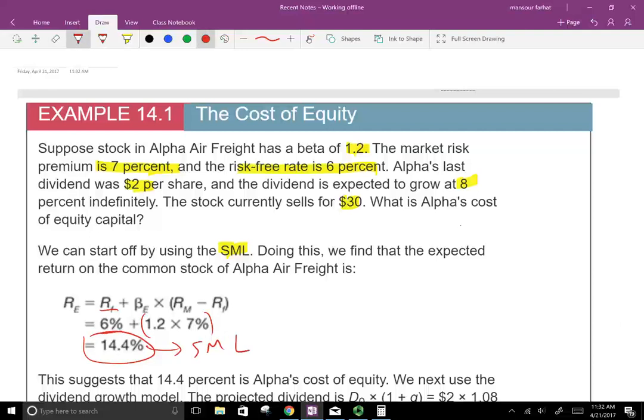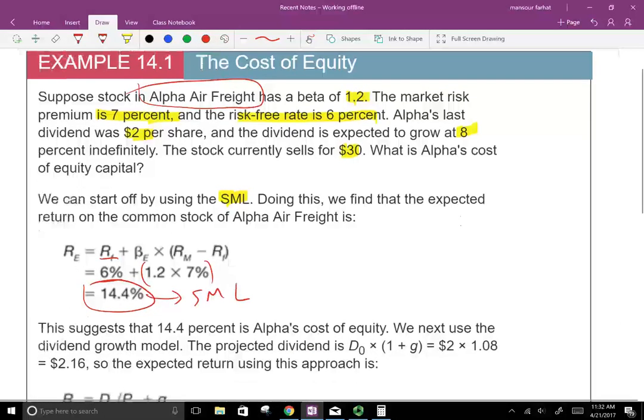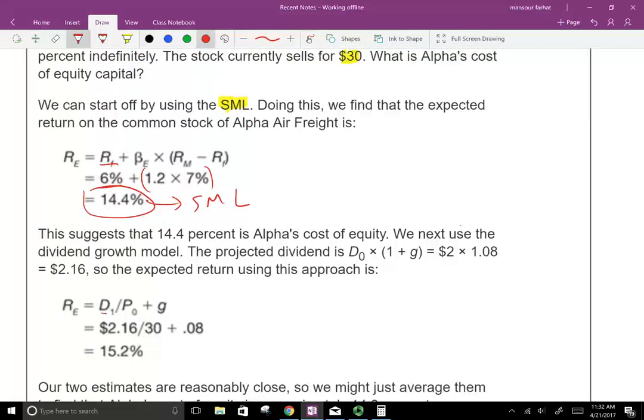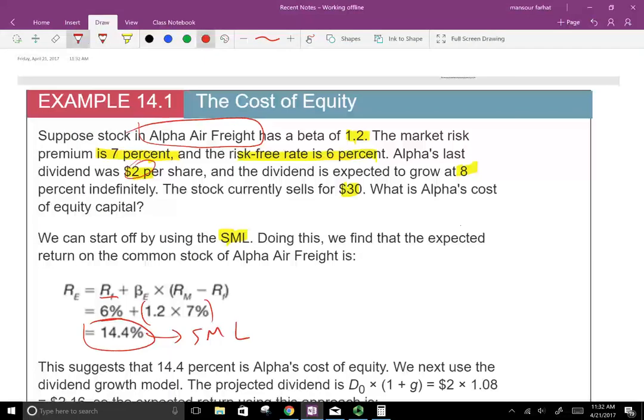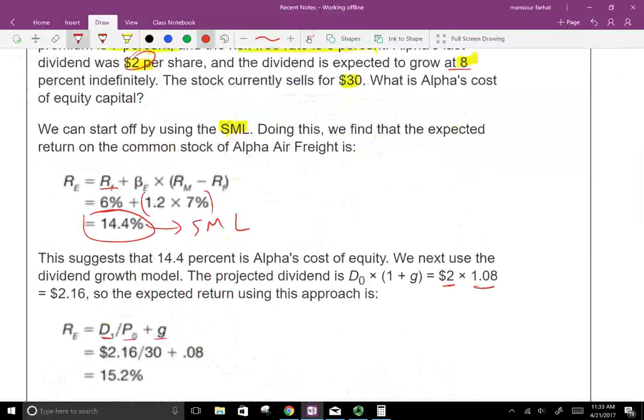Now we could use the same thing and find the cost of equity using the dividend growth approach. The formula is D1, the future dividend, divided by the current price, plus g. Well, the future dividend, the company is paying right now $2, and it's going to grow at 8%. So $2 times 1.08 is going to give us D1 of $2.16. So we're going to take $2.16, divided by the current price of $30, then add the growth rate of 8%, and that's going to give us 15.2%. So under the dividend growth model, the cost of capital is 15.2%.